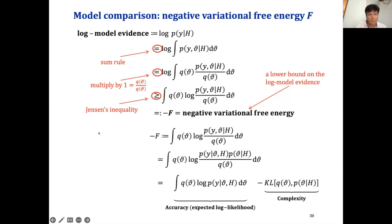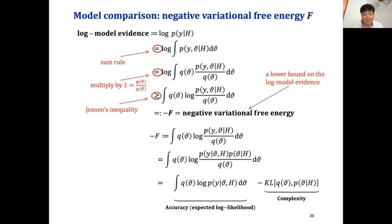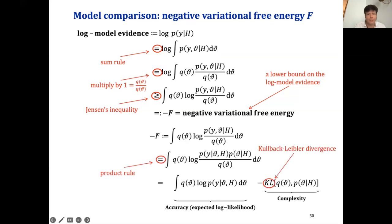An important point is that the negative variational free energy can be decomposed into accuracy minus complexity — it has an accuracy term and a complexity term.